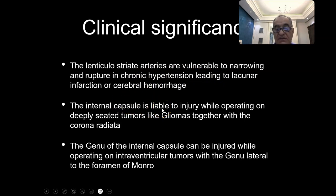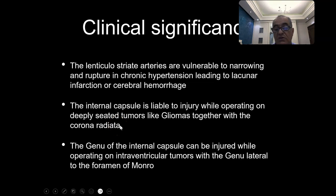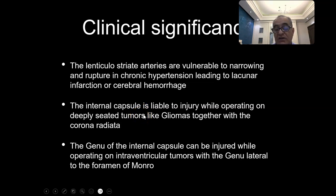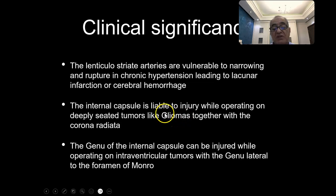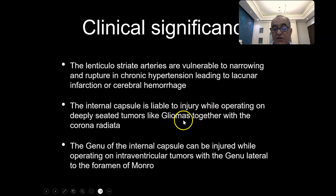The internal capsule is also liable to injury while operating on deeply seated tumors like gliomas, together with the corona radiata. Injury of fibers at the subcortical level causes weakness and functional problems. At the cortical level, the cerebral cortex has rich blood supply and the supplementary motor area can regenerate rapidly, but injury of the subcortical region — whether the corona radiata or internal capsule — has poor blood supply and does not regenerate.